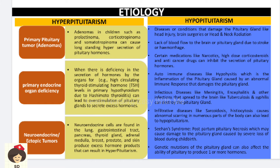Coming to the etiology of hypopituitarism: this can be due to damage to the pituitary gland from a head injury, brain surgery, or head and neck radiation, resulting in decreased secretion of pituitary hormones. Lack of blood flow causing infarction of the pituitary gland can occur due to stroke or hemorrhage. Certain medications like narcotics, corticosteroids, and anti-cancer drugs can suppress the production of pituitary hormones.